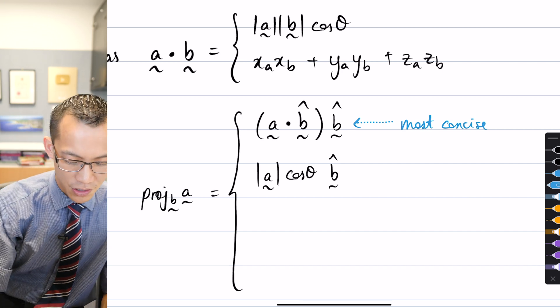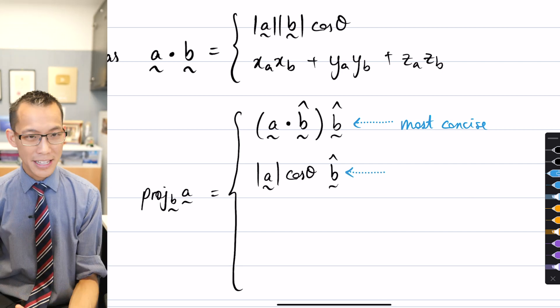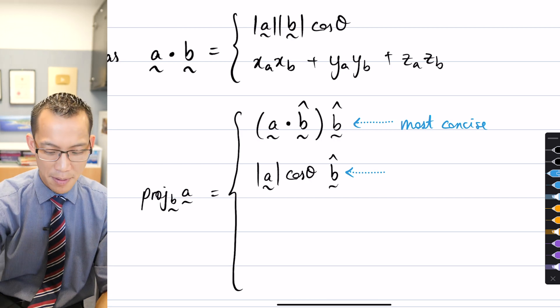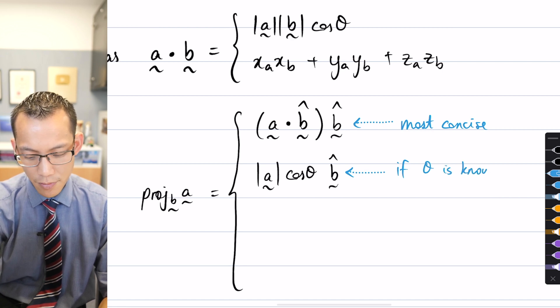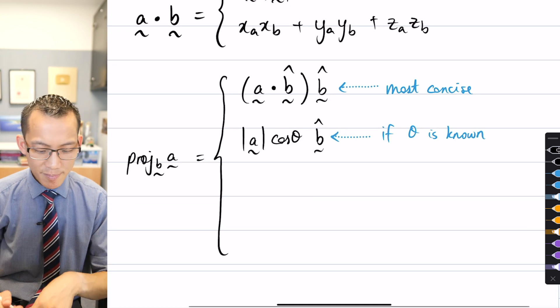So when would you use this version? Well, if in the question either you're given the angle or you were asked the angle, like you had to work it out in an earlier part, if the angle is known, then you would just use this one because it just cuts out some of the work for you.